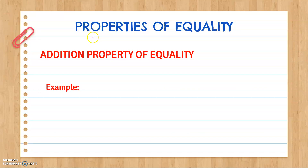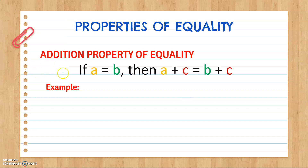Another concept which we need to understand is the properties of equality. First, the addition property of equality. This property states that if a is equal to b — where a represents the expression on the left side of the equation and b represents the expression on the right side of the equation — then a plus c is equal to b plus c. Meaning to say, if you add a number on the left side of our equation and add that same number on the right side of the equation, then the left side and the right side of our equation are still equal.